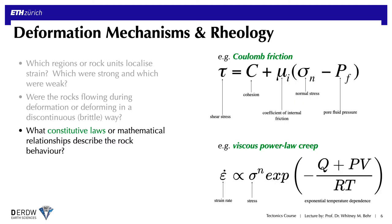Structural geology is also fairly quantitative in that we're always seeking to use the rock record to describe relationships between stress and strain, known as constitutive laws, and more generally to come up with mathematical descriptions of different deformation types at different spatial scales. For example, we've developed mostly empirically based relationships that describe brittle or frictional deformation, as in the example in the upper right known as Coulomb friction, which relates the shear stress on the fault plane to the internal cohesion of a material, its friction coefficient, and the effect of normal stress placed on that structure.